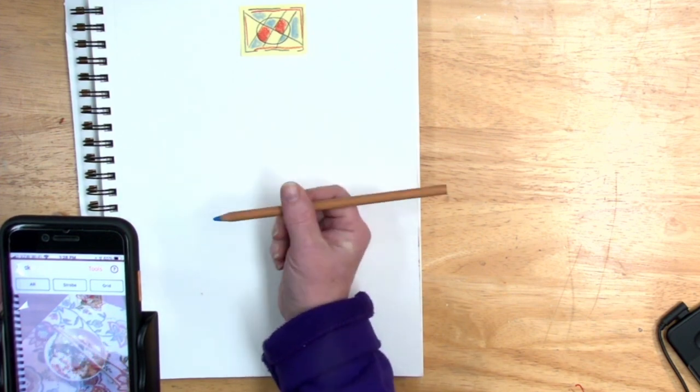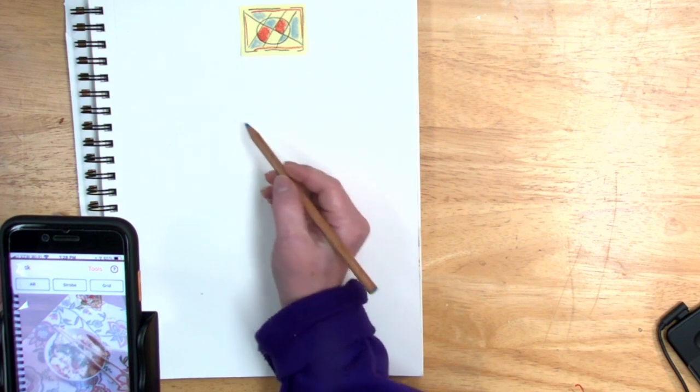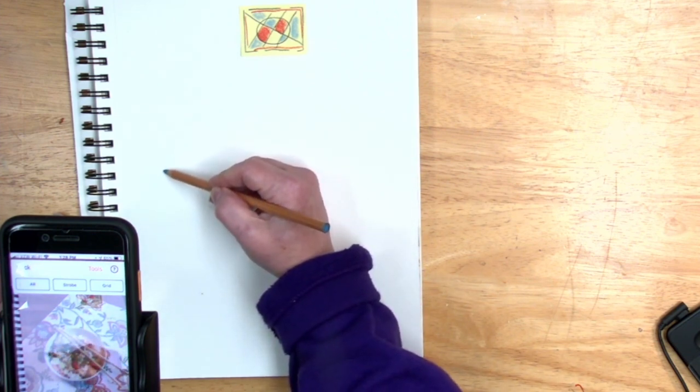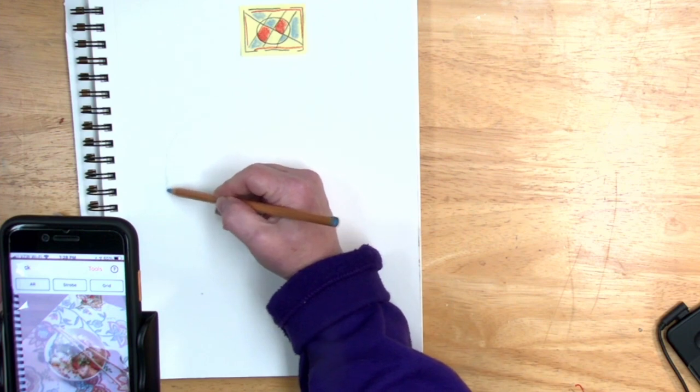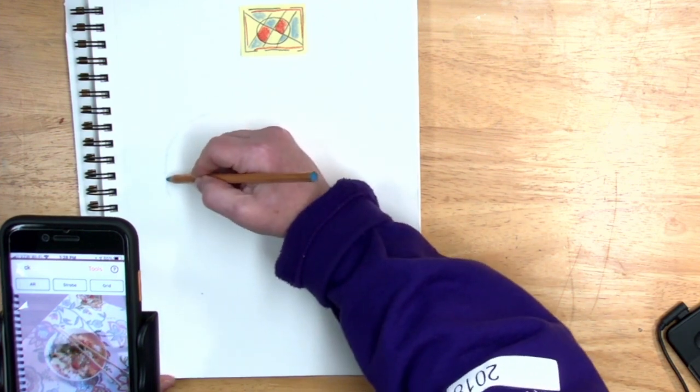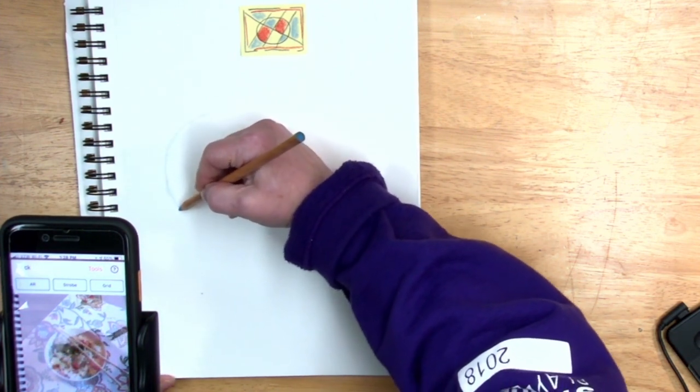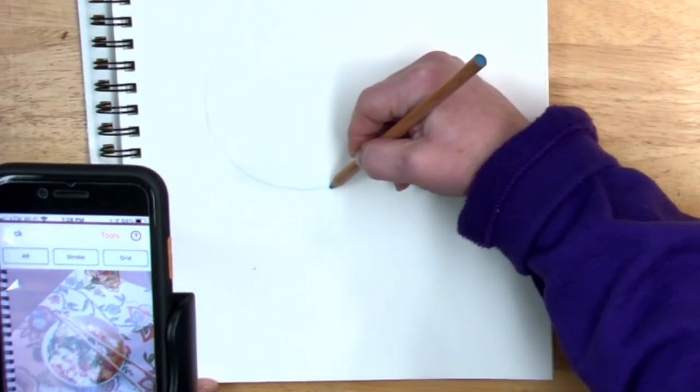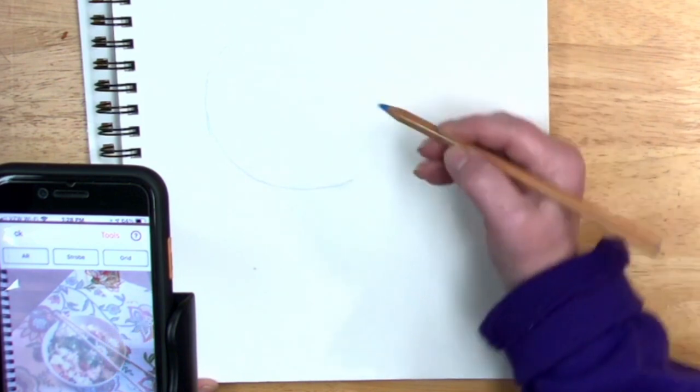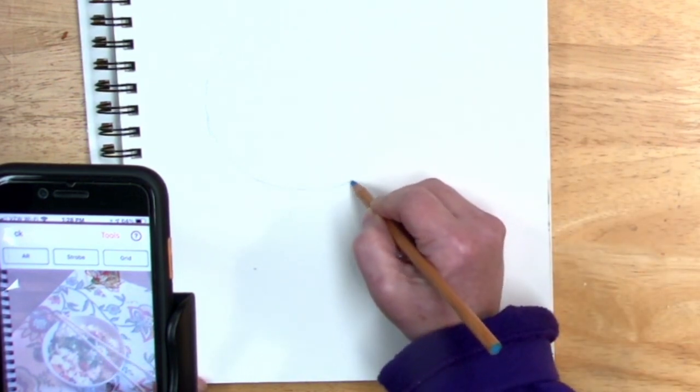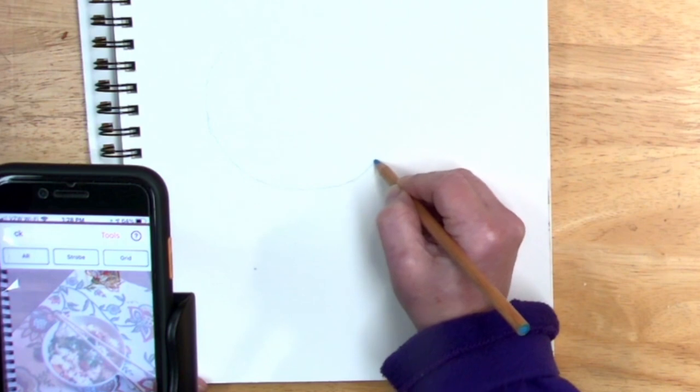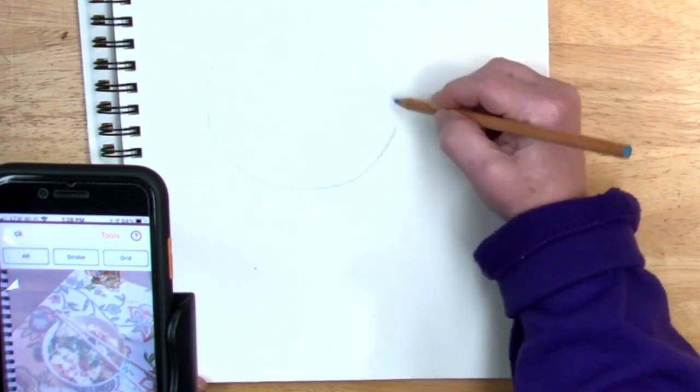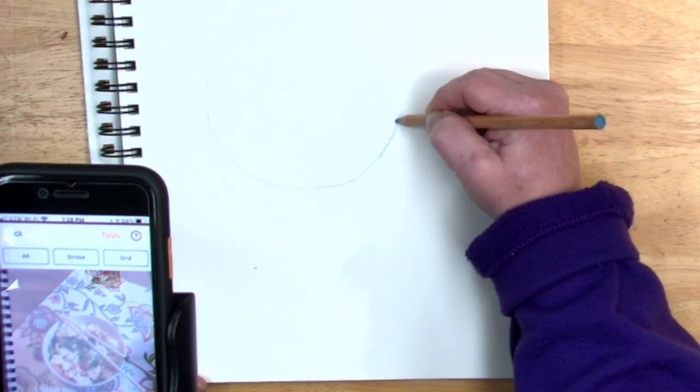And I'm just drawing with a watercolor pencil. So you may or may not be able to see this right away. But I am just tracing that circle right there. I'll pick it up here and show you in just a second.